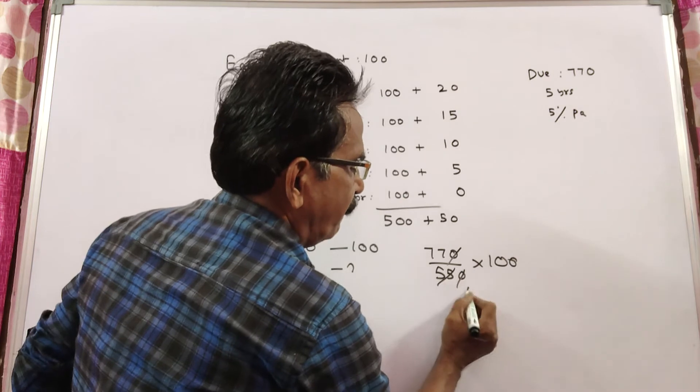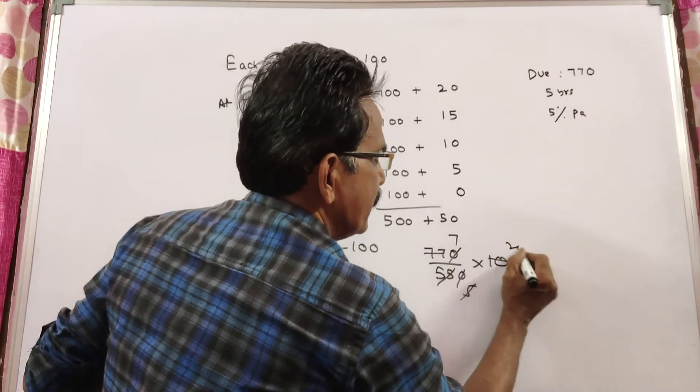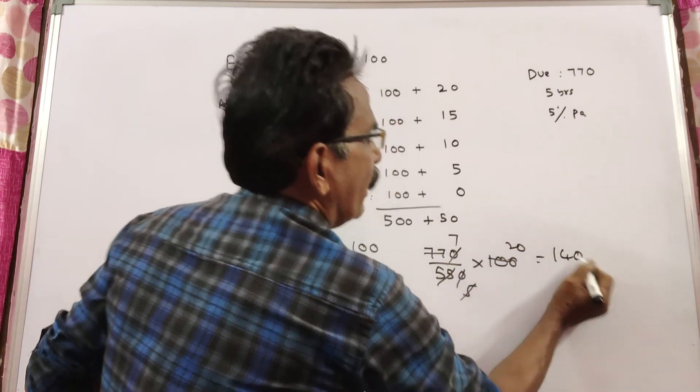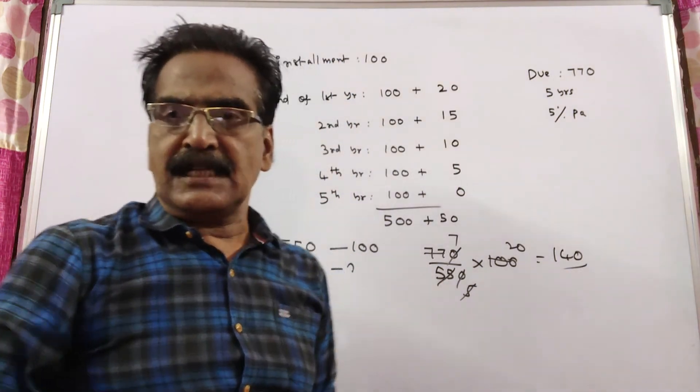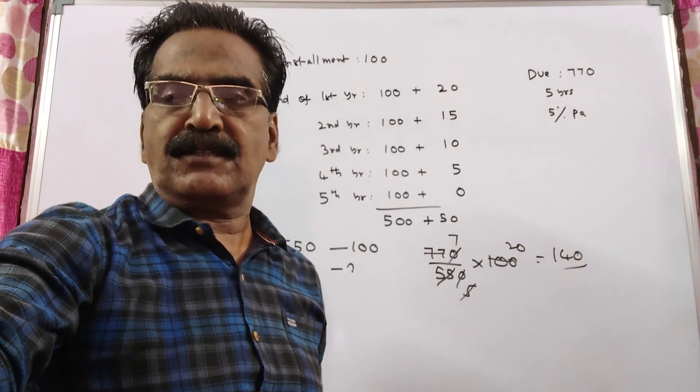00 cancel, 11 5s, 11 7s, 5 20s, 77 over. 140 rupees is your installment. Okay friends, thank you. Have a nice day.